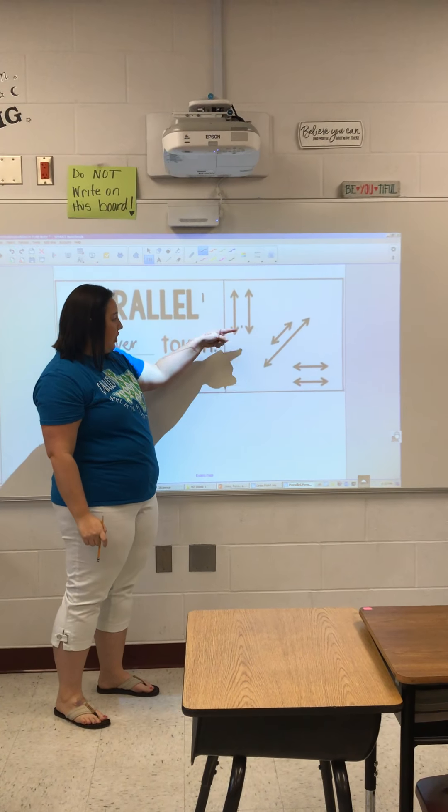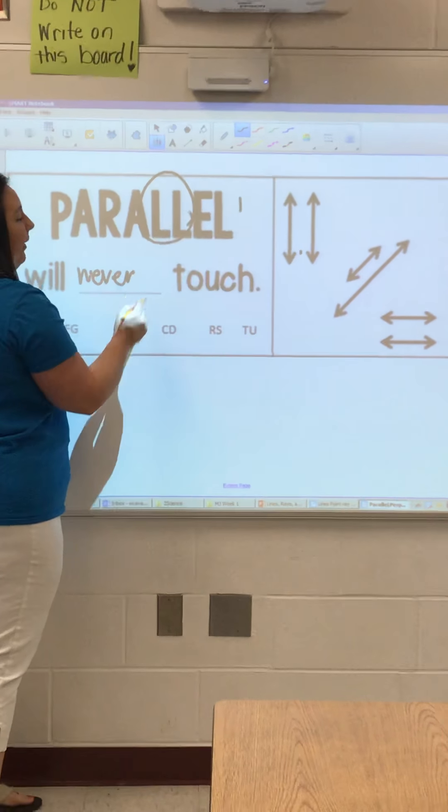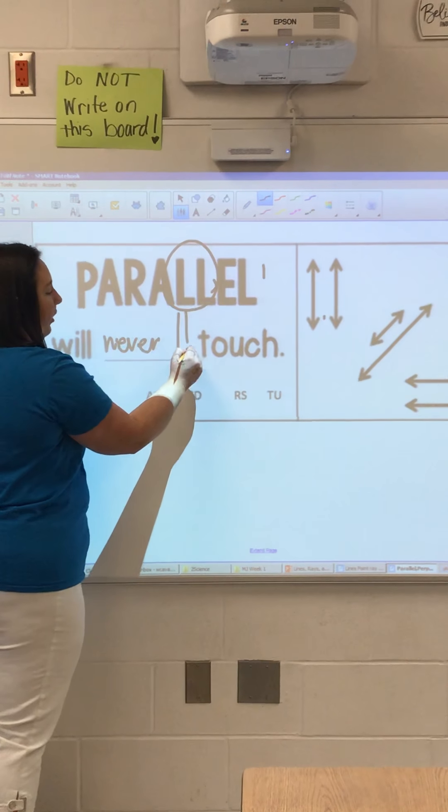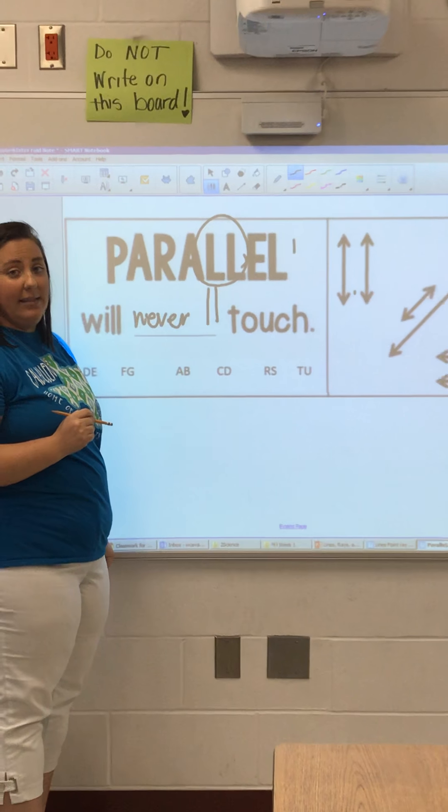They can go in any direction. So they can go up and down, they can go from side to side, or they can go from left to right. A very good clue that you have a set of parallel lines is by looking at the L's in parallel. The two L's in the word parallel are parallel themselves.